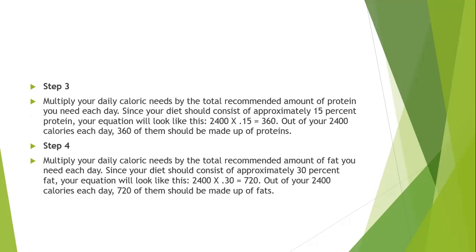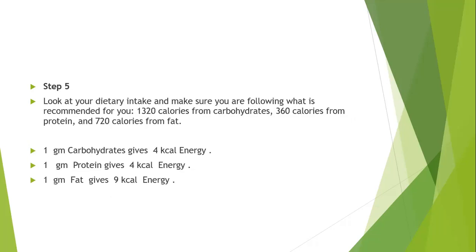Step 4: Multiply your daily caloric needs by the recommended proportion of fat. Since your diet should consist of approximately 30% fat, 720 of your 2400 daily calories should be made up of fats. Step 5: Review your dietary intake to ensure you are following the recommendations: 1320 calories from carbohydrates, 360 calories from protein, and 720 calories from fat.